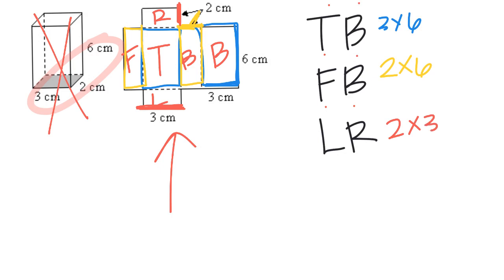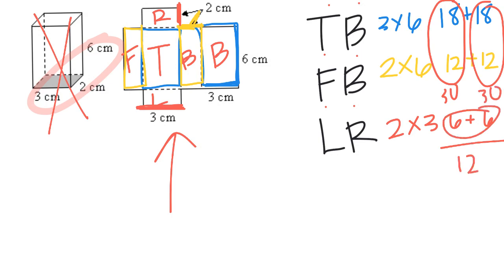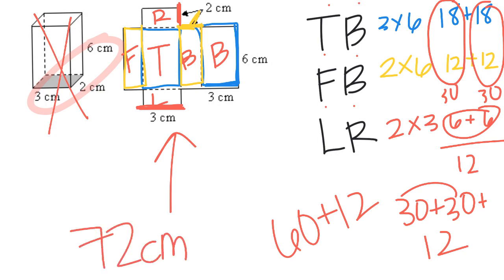So then what I know is for the top and bottom, I have 18 and 18. For the front and the back, it's a two by six, so that would be 12 for the front and 12 for the back. And then for the left and the right, it's a two by three, so that's a six and a six. So then when I add all this up, I have 18 and 18, 12 and 12, six and six. I'm going to actually do some grouping. I know 18 and 12 is 30, and 18 and 12 is 30, and six and six is 12. So that means I have 30 plus 30 plus 12, which 30 and 30 is 60, plus 12 gives me 72 centimeters squared.